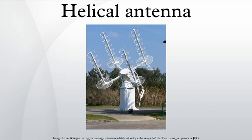The dimensions of the helix are determined by the wavelength λ of the radio waves used, which depends on the frequency. In axial mode operation, the spacing between the coils should be approximately one-quarter of the wavelength, and the diameter of the coils should be approximately the wavelength divided by pi. The length of the coil determines how directional the antenna will be as well as its gain. Longer antennas will be more sensitive in the direction in which they point.